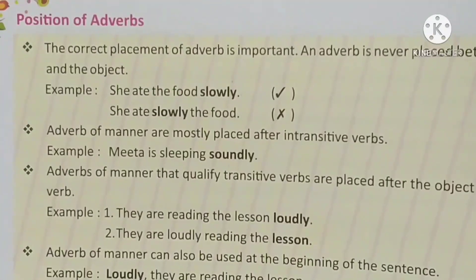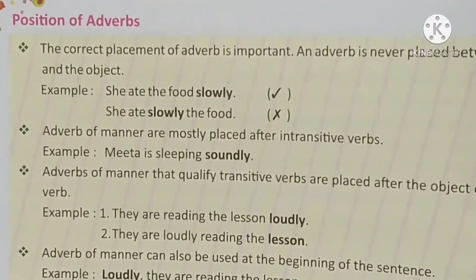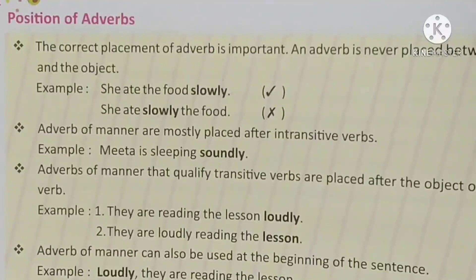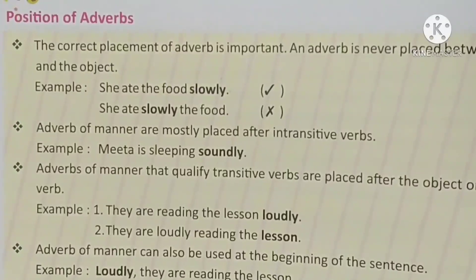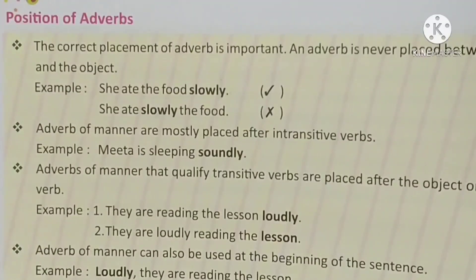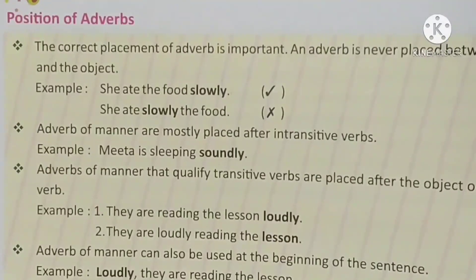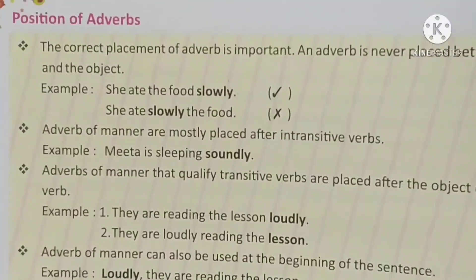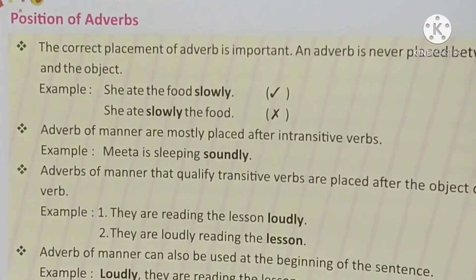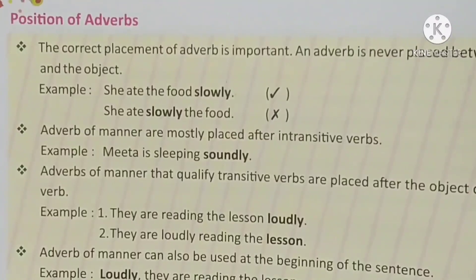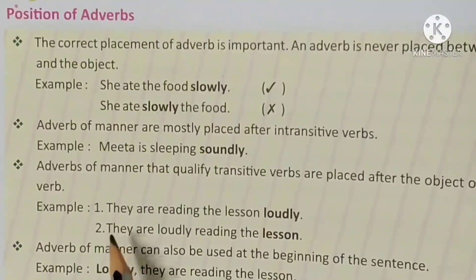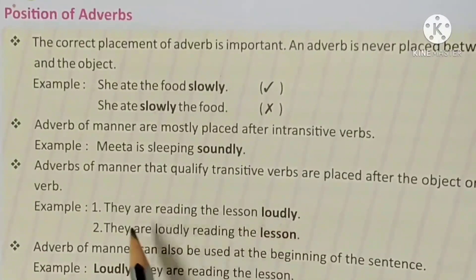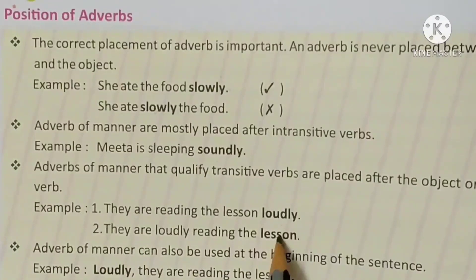Third point: adverbs of manner that qualify transitive verbs are placed after the object or before the verb. Adverb of manner जो transitive verb को qualify करता है उसे object के बाद और verb के पहले place करते हैं। For example: 'They are reading the lesson loudly' or 'They are loudly reading the lesson.'